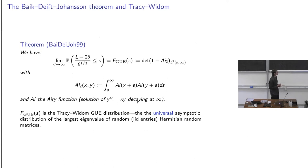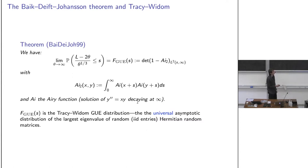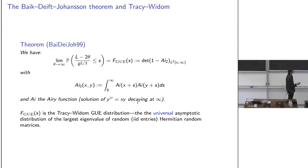The result, due to Baik-Deift-Johansson (1999), states that as θ → ∞, L is on average 2θ. The fluctuations are of order θ^(1/3) — not √θ as in the CLT — and the limiting distribution is the Tracy-Widom distribution, written as a Fredholm determinant of the Airy kernel operator, where Ai is the Airy function.